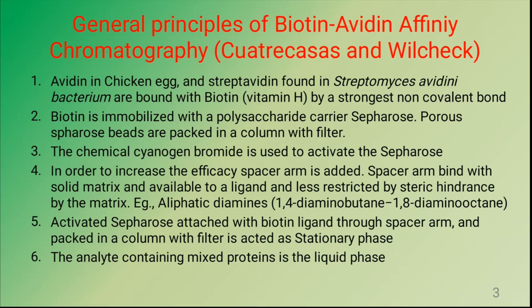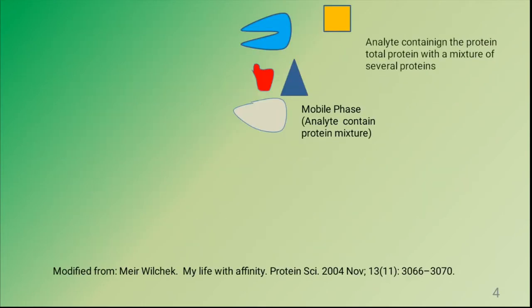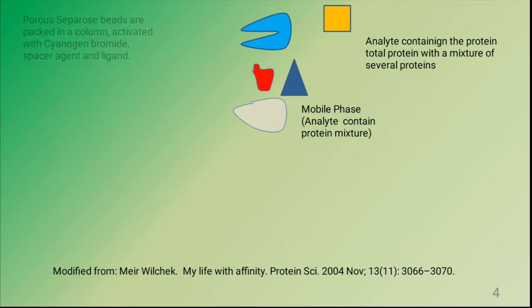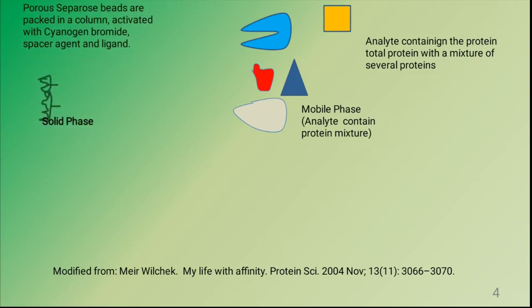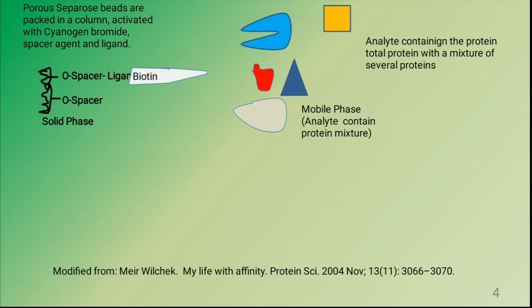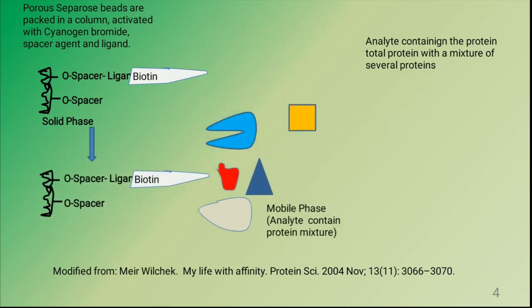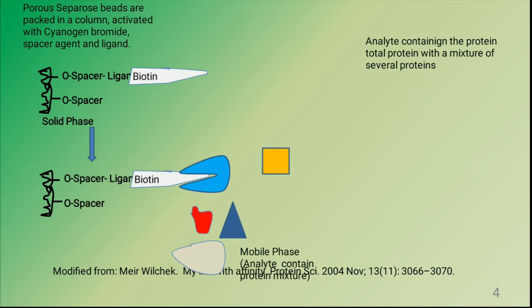The analyte containing mixed proteins is called the liquid phase or mobile phase. This analyte mobile phase contains different types of proteins in solution. The solid phase consists of porous sepharose beads packed in the column, activated by cyanogen bromide and spacer reagent, with the ligand biotin added. Once the analyte solution is passed through the activated packed column, all the other proteins pass through the porous substances, whereas avidin tightly binds with the biotin linked through the spacer to the solid sepharose matrix.